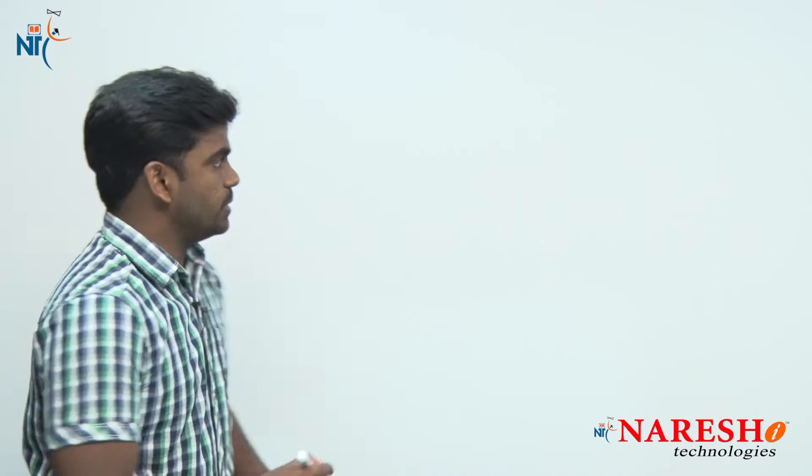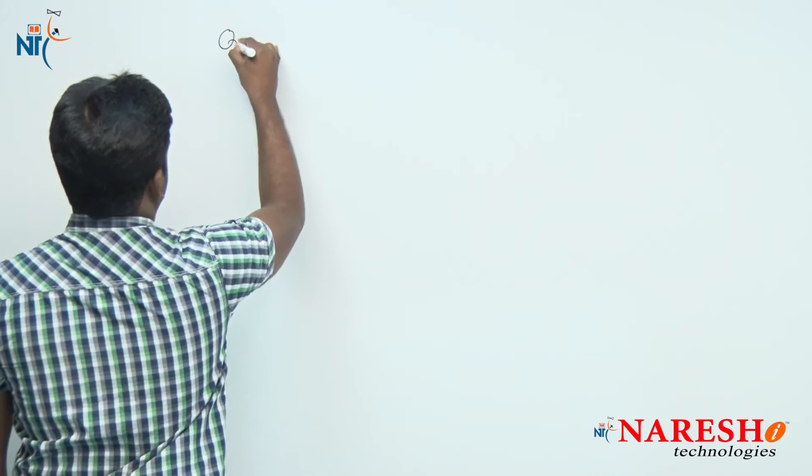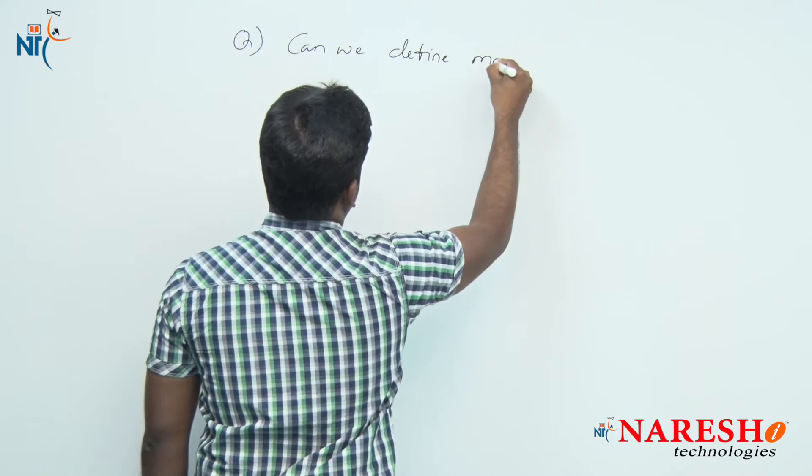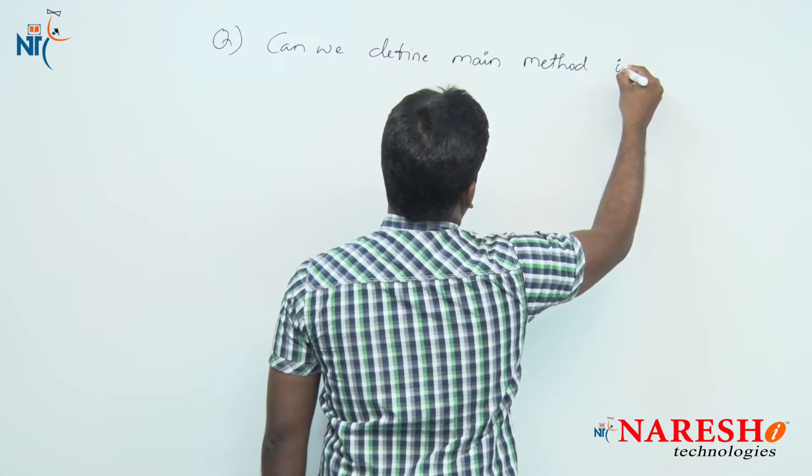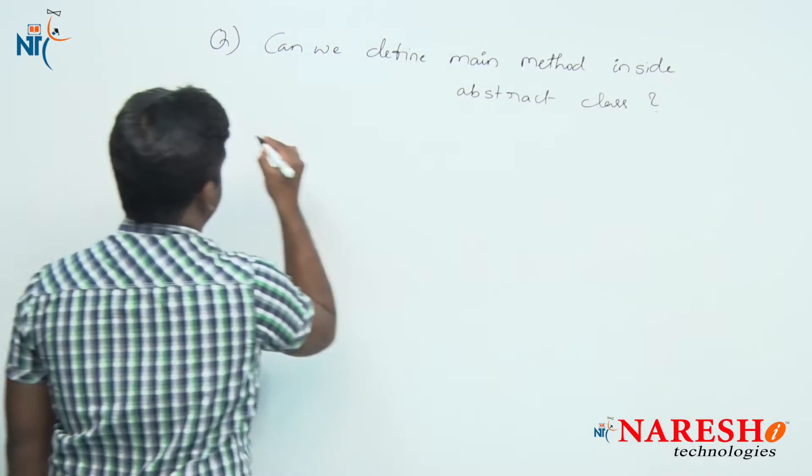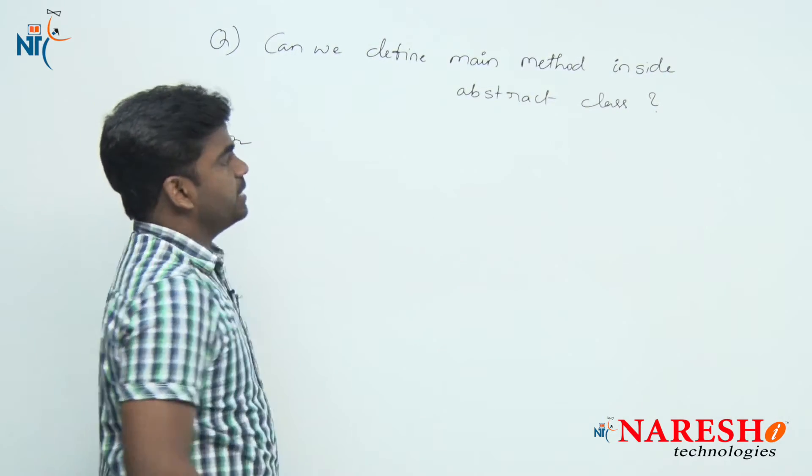The question is: can we define a main method inside the abstract class?